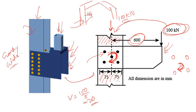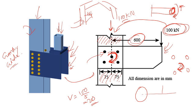Going back to basics: consider a shaft with a torsion applied. The stress distribution across the cross-section shows that the outermost fiber is stressed maximum and the center fiber has zero stress. Similarly, in our bolt group, the bolt at the center carries zero torsional stress.